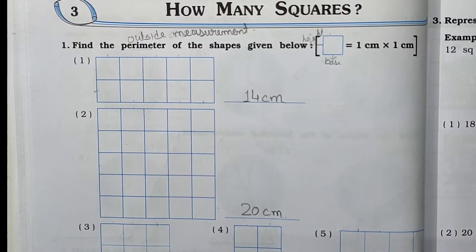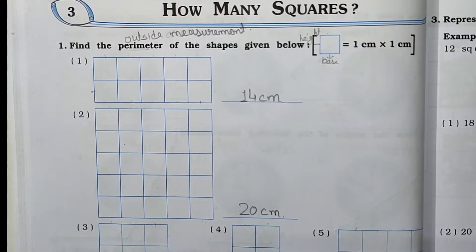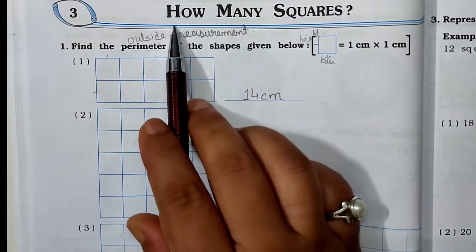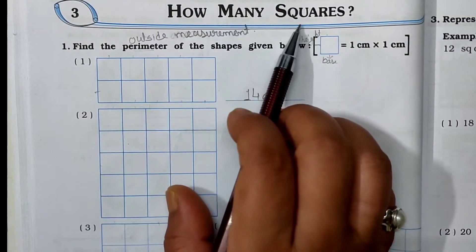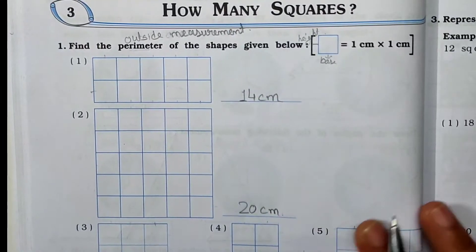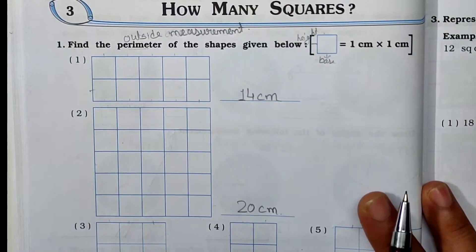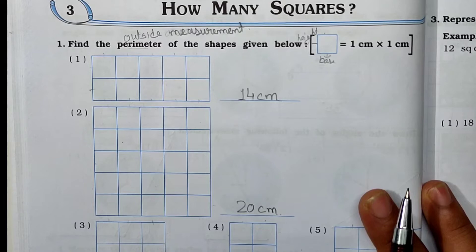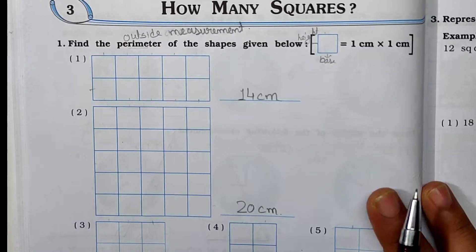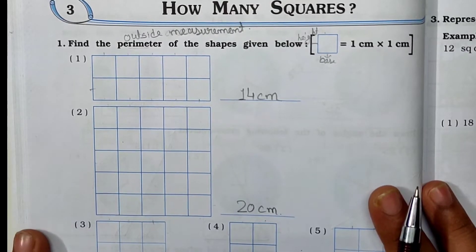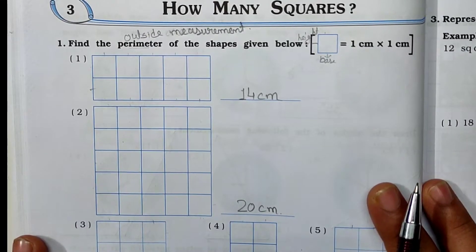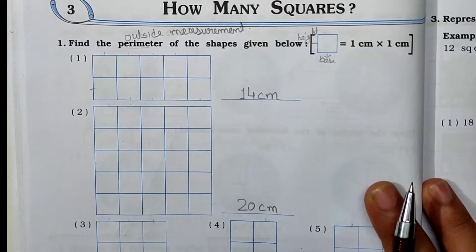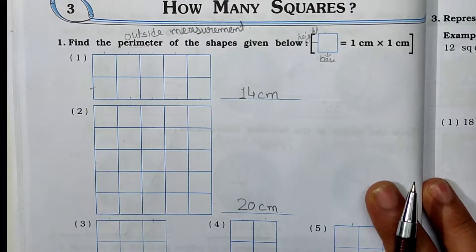Today we will start our new chapter, chapter number 3, 'How Many Squares?' In this chapter we study about squares. In short, we have to study about perimeter and area. So first of all we will see the perimeter.